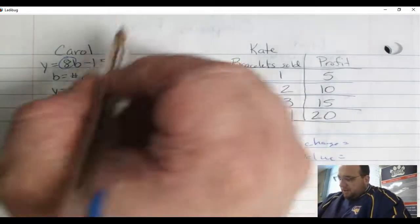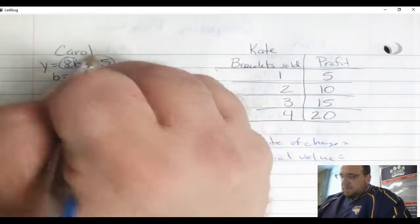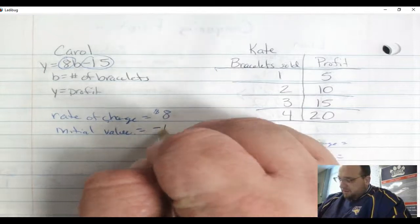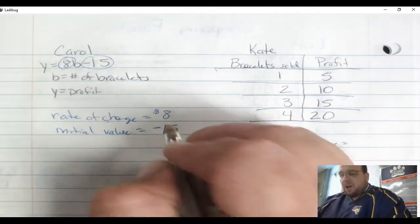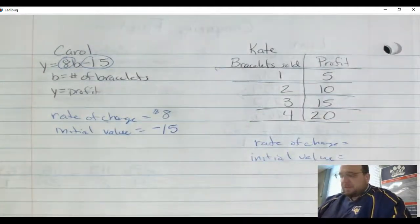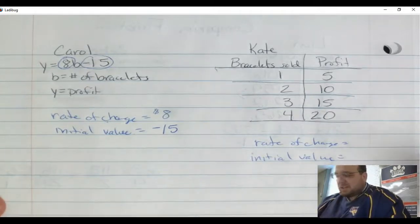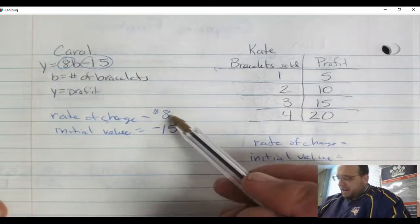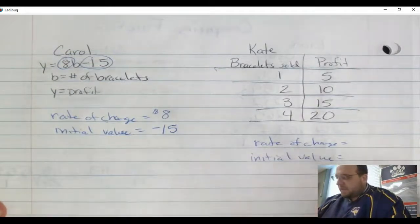The initial value can be found right here. That's your b or your y-intercept. That is negative 15. That lets me know that she started in the hole. She must have had to buy material at the beginning, so that's why she started in the hole. So rate of change for Carol is $8, initial value is negative 15.